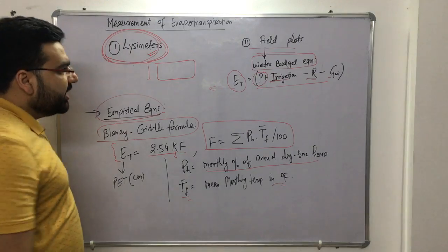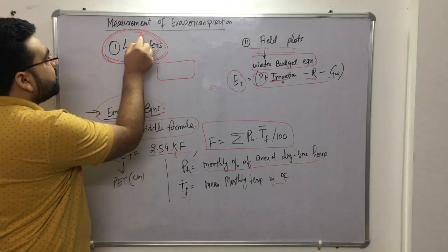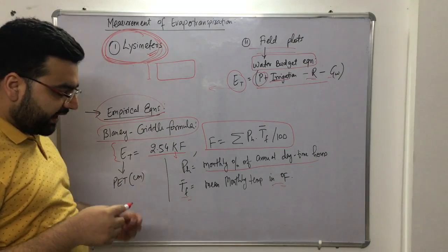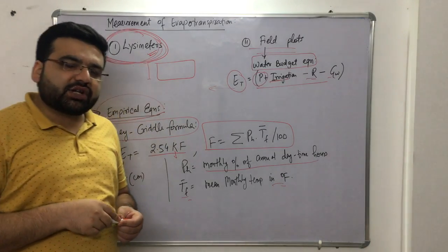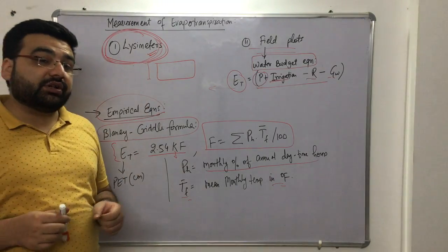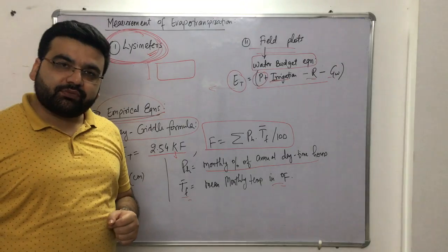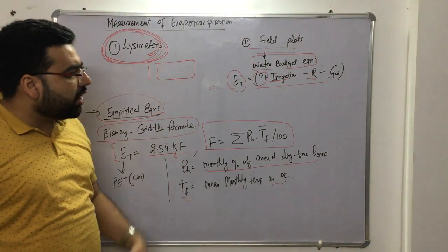These are the main methods, but the most important is the lysimeter. Questions like 'Which of the following is used for calculation of evapotranspiration?' will have lysimeter as one option. I hope you have understood the measurement of evapotranspiration.